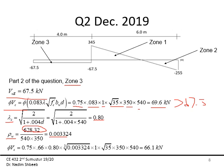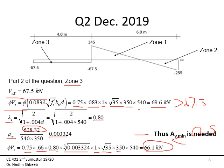Computing φVc using Equation C with λs: φVc = 0.75 × 0.66 × λs × (ρw)^(1/3) × λ × √f'c × bw × d = 66.1 kN. Since 66.1 kN < 67.5 kN, av,minimum IS required at this cross-section. This is a significant change from ACI 318-14 — under the old code, minimum reinforcement was not required in that zone, but under the new ACI 318-19 code it is.